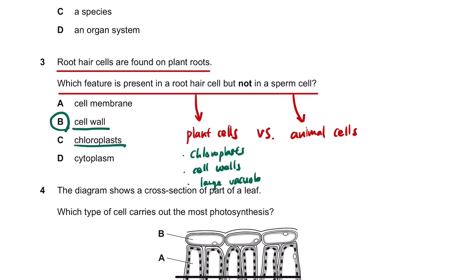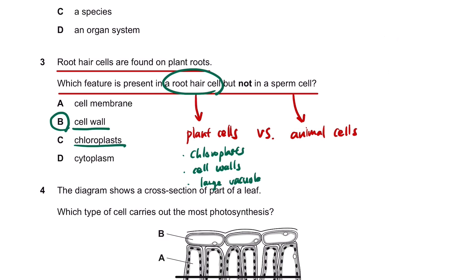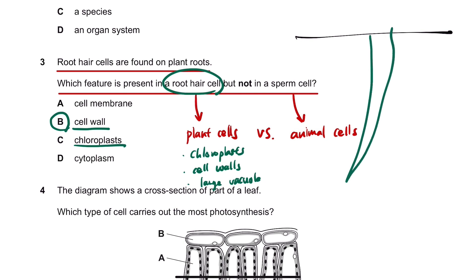The answer is B only, because root hair cells don't actually have any chloroplasts. The reason is that root hair cells are in the roots, so do they need any chloroplasts? No, because they can't receive sunlight. There's no sunlight going into the soil, so they don't need chloroplasts.